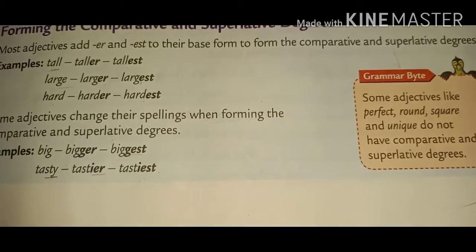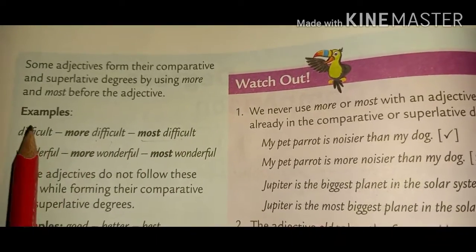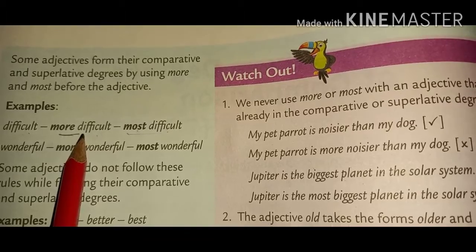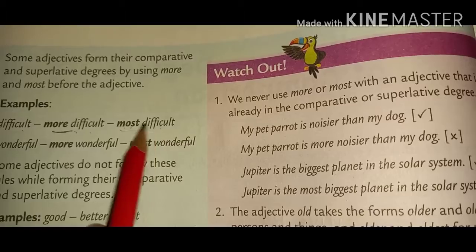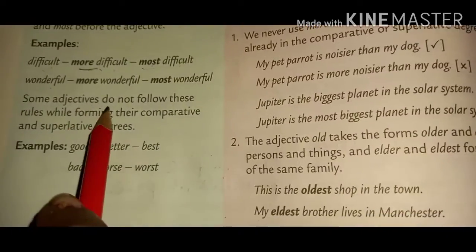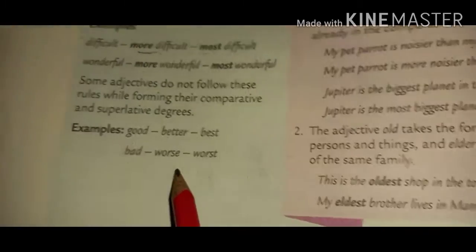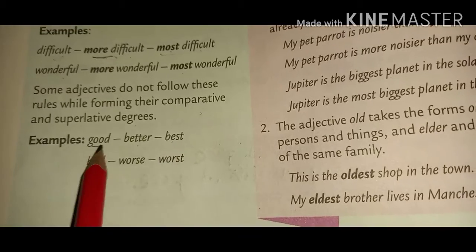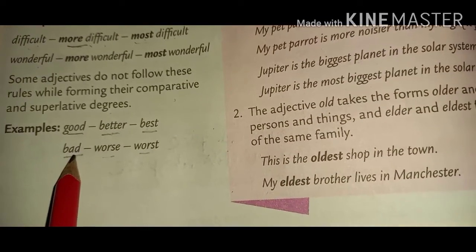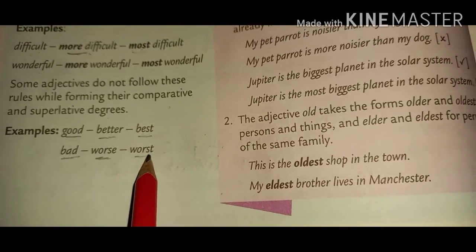Turn the page, children. There are some more degree of comparison examples. Difficult, more difficult, most difficult — here we cannot write 'difficulter' or 'difficultest'; we use 'more' for comparative and 'most' for superlative. Wonderful, more wonderful, most wonderful. Some adjectives do not follow these rules — for example, good, better, best; bad, worse, worst. Good is positive, better is comparative, and best is superlative degree.